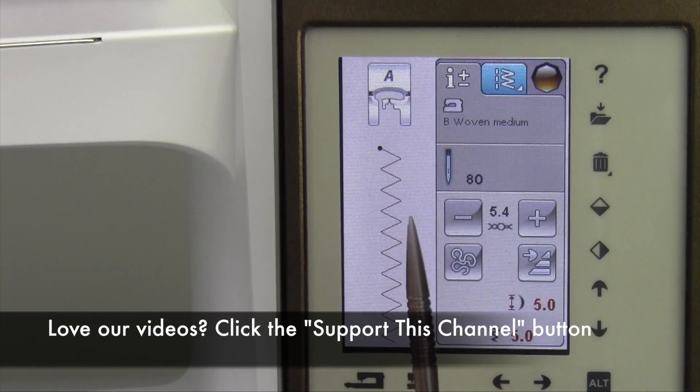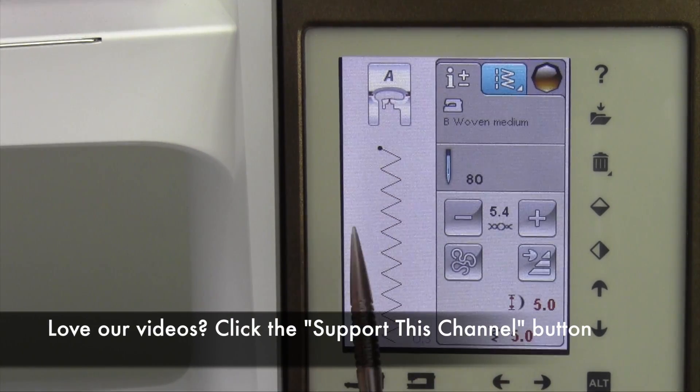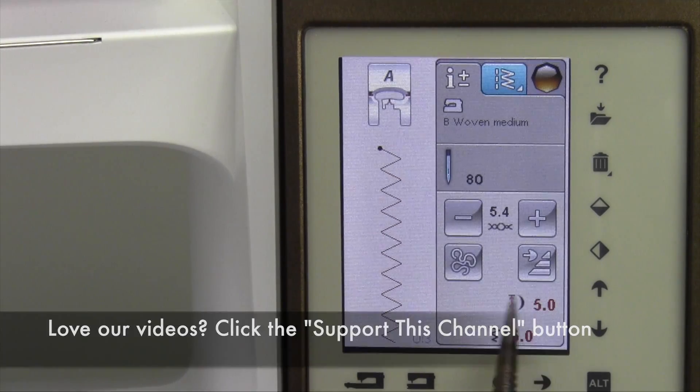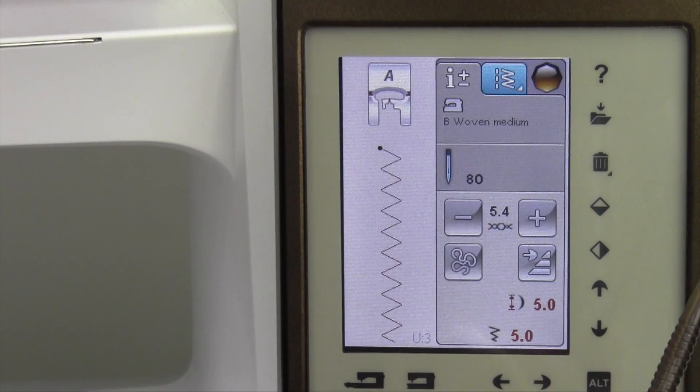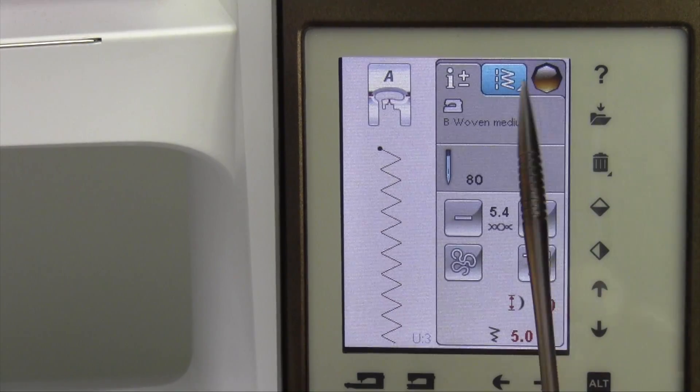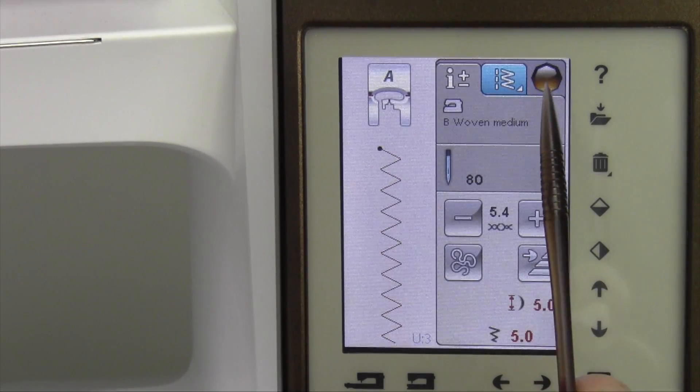You can even have multiple copies of the same stitch, so you could have one zigzag that's set for this one, and you could have one set for a whole other setting. It's pretty cool that you can have your own settings right on the same menu.